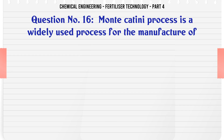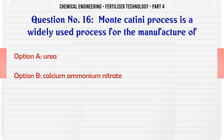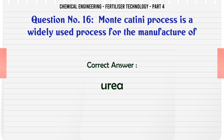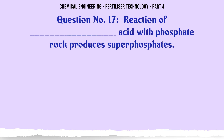Monte-Catini process is a widely used process for the manufacture of: a. urea, b. calcium ammonium nitrate, c. triple superphosphate, d. none of these. The correct answer is: urea.